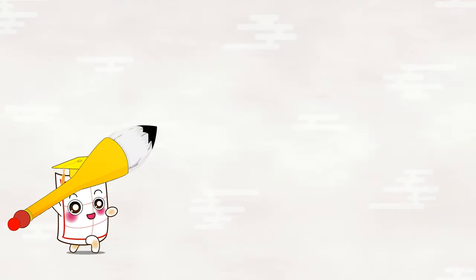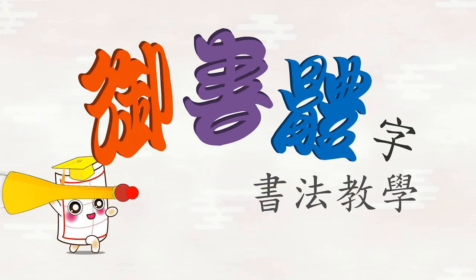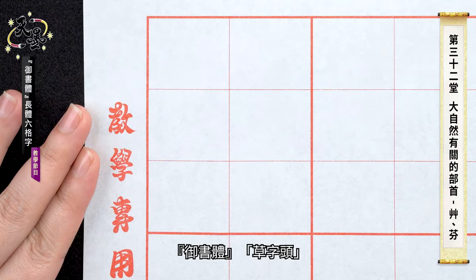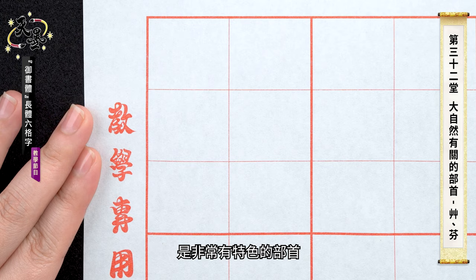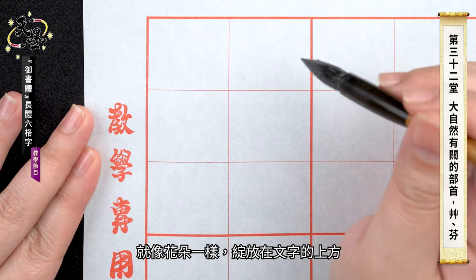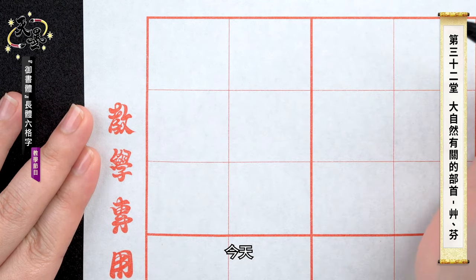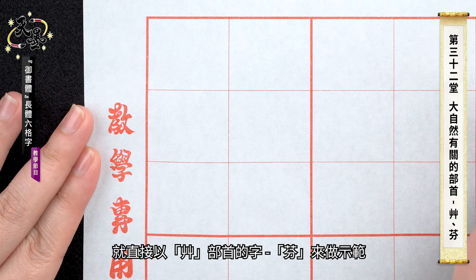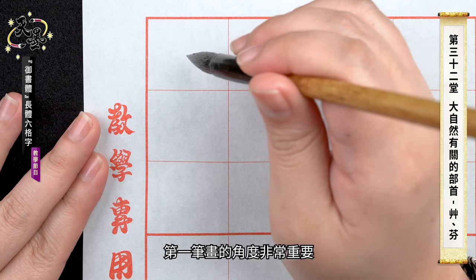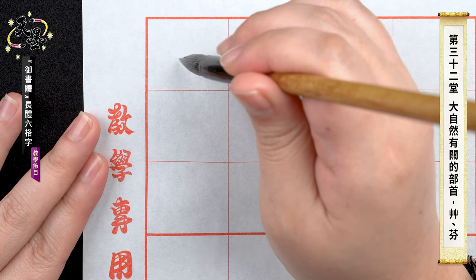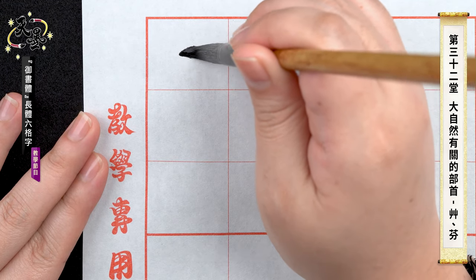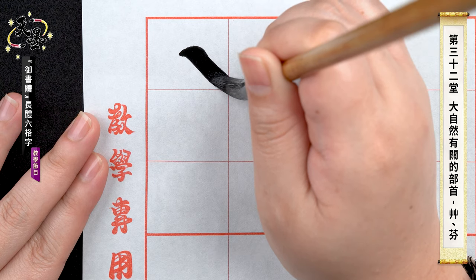Let's go practicing! Yu Shu Ti calligraphy tutorial. As a radical, 草 is a feature of Yu Shu Ti, like a flower blossoming upon the character. Let's see how to write its related character 分. First stroke — the starting angle is important: 45 degrees toward the center.